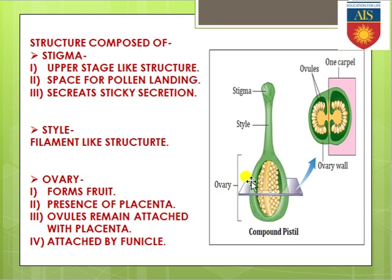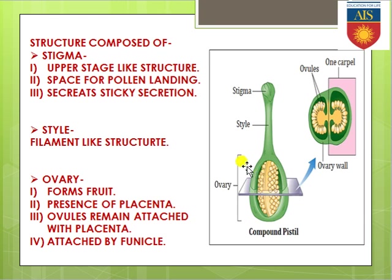The lowermost portion is the ovary. Keep in mind that this ovary will form the fruit in future. Within the ovary there is a partition — a membrane-like structure commonly known as placenta. Many ovules, which are units of the ovary, remain attached to the placenta, and these ovules will produce seeds in future. Each ovule is attached to the placenta by a stalk-like structure called funicle.